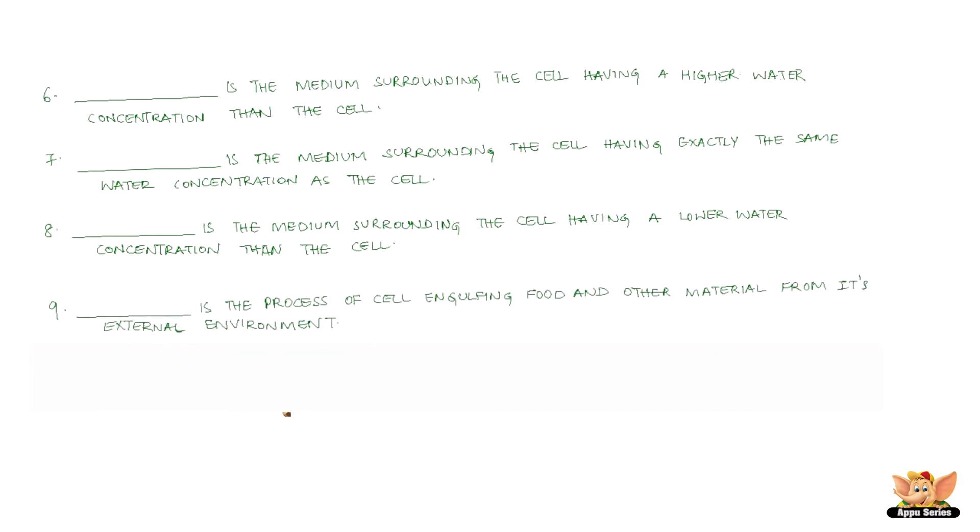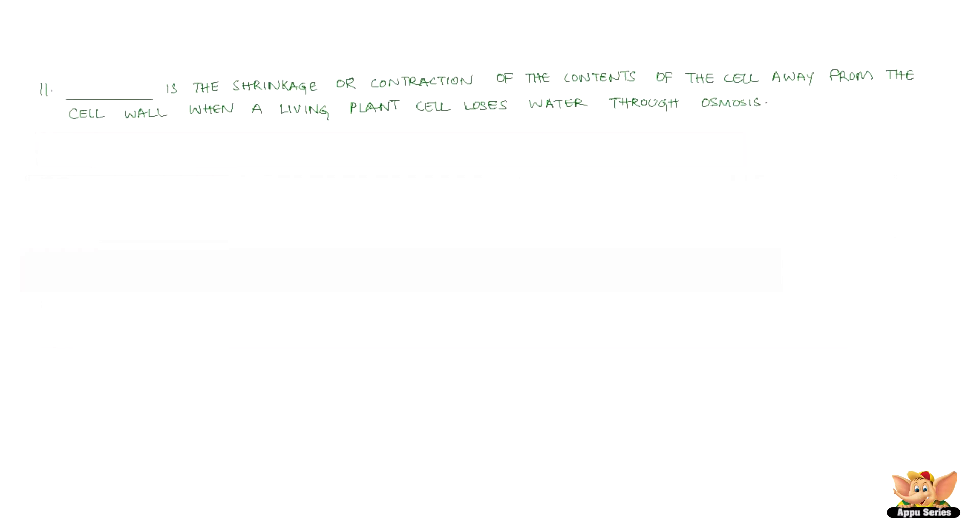Dash is the process of cell engulfing food and other materials from its external environment. Dash is the rigid outer covering to the plasma membrane and is found in plants only. Dash is the shrinkage or contraction of the contents of the cell away from the cell wall when a living plant cell loses water through osmosis.